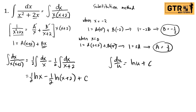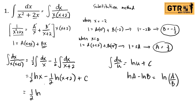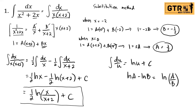We can simplify by applying the law of logarithms: ln A minus ln B equals ln of A over B. Since both terms share the same constant 1 half, the final answer is 1 half ln of X over X plus 2, plus the constant of integration C.